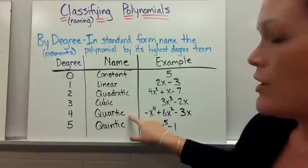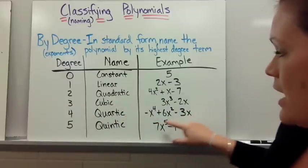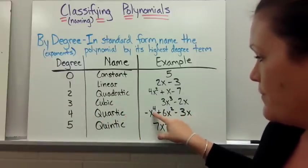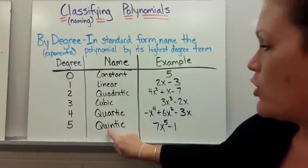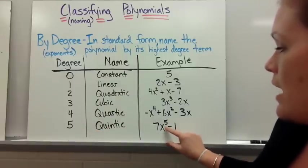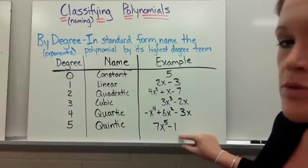If you have a degree of four we call it quartic. Again highest degree here was a four. And last but not least five we call that quintic. The highest degree between my terms was a five.